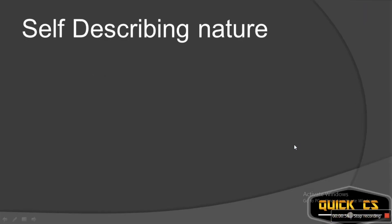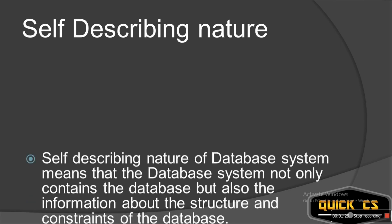Let's look at the first characteristic: self-describing nature. What do you mean by self-describing nature? The database system in DBMS does not only contain the database, but also the information about the constraints and the structure of the database. So it is describing itself — what is the structure of the database, what are the constraints of the database, and so on. This is called the self-describing nature of DBMS.